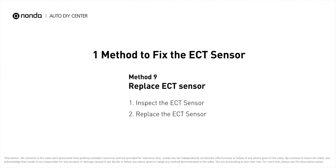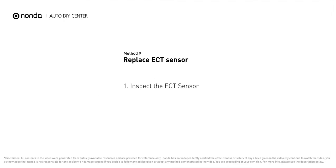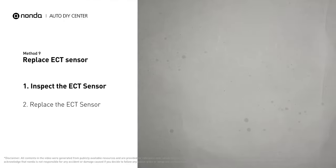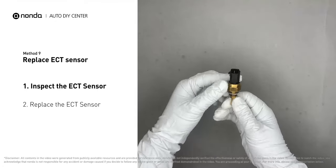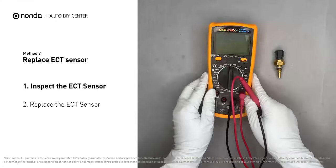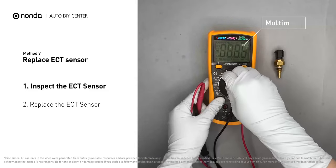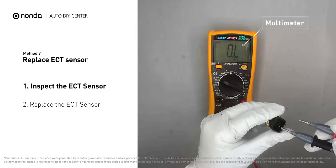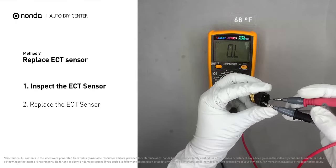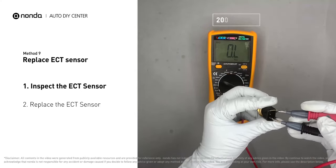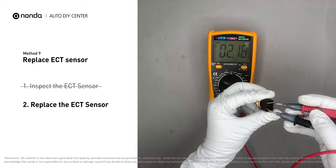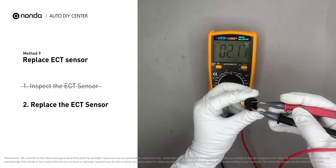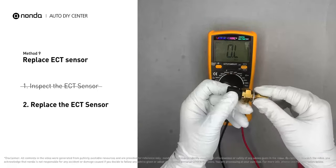Here is one method to fix the ECT sensor. Method 9: Replace ECT Sensor. Remove the ECT sensor from the engine, then use a multimeter to test it. At an ambient temperature of 68 degrees Fahrenheit, the sensor resistance should be between 2000 ohms and 3000 ohms. If you do not get a reading in that range, this indicates the ECT sensor is faulty and needs to be replaced.